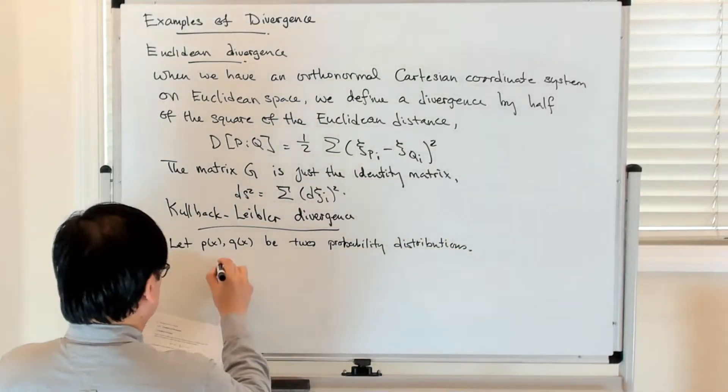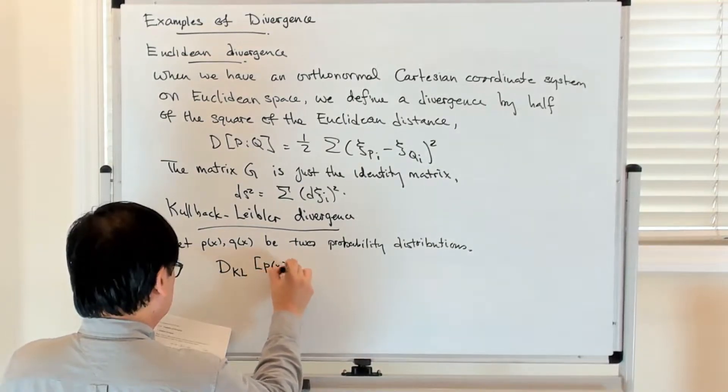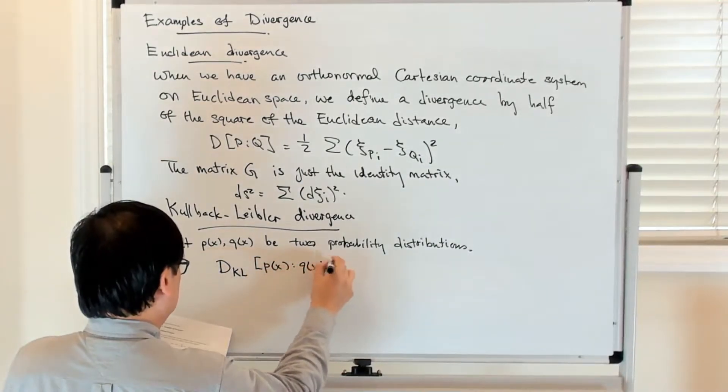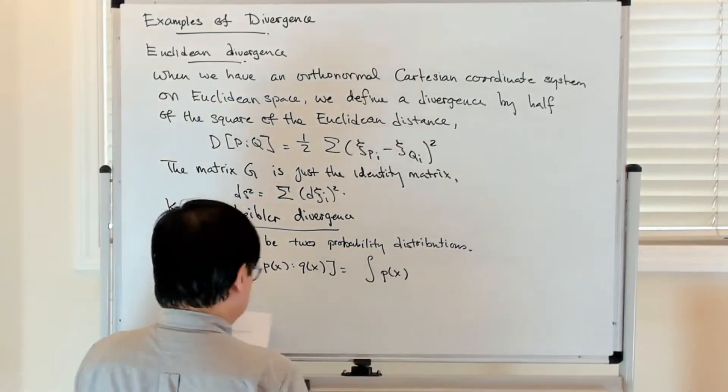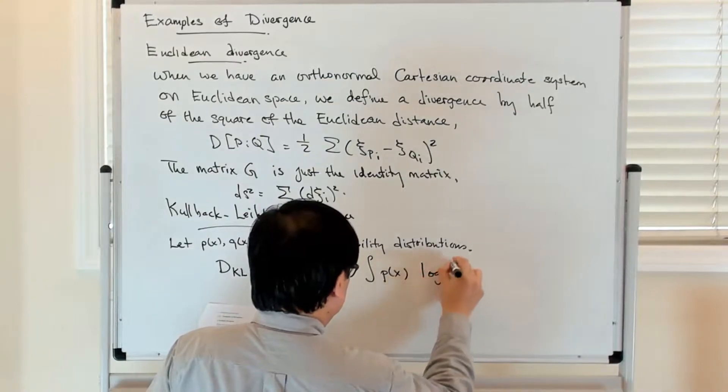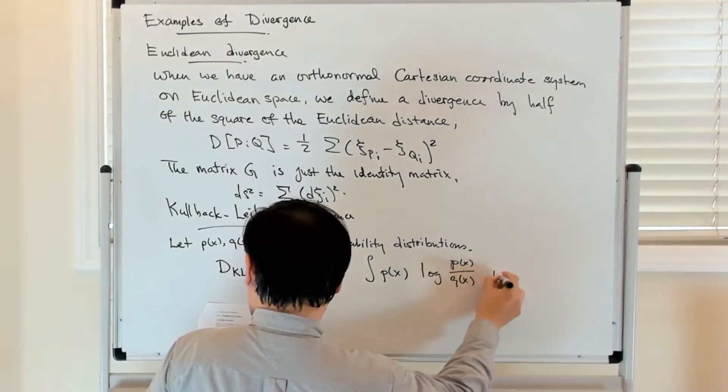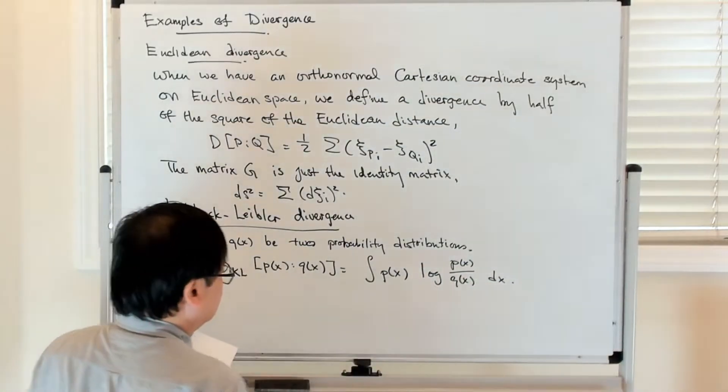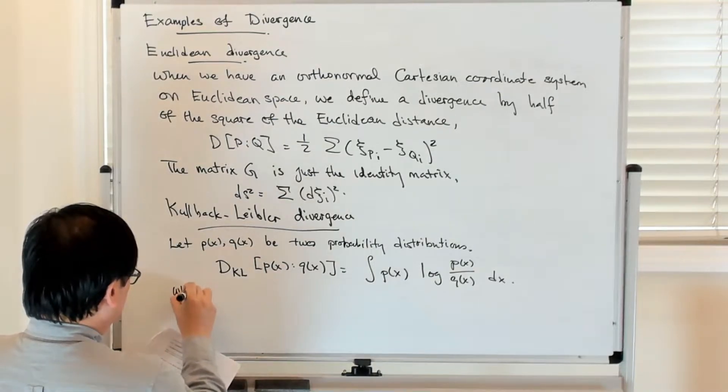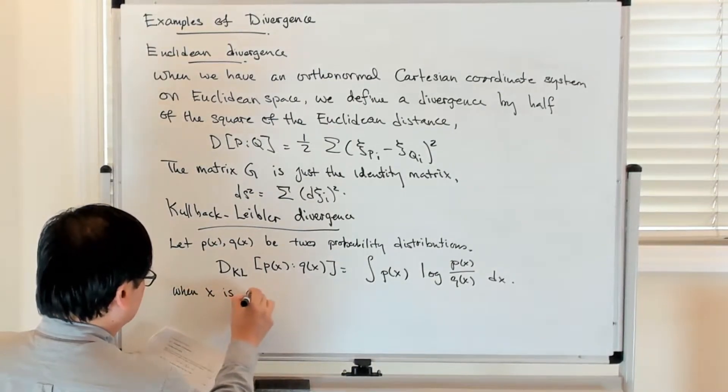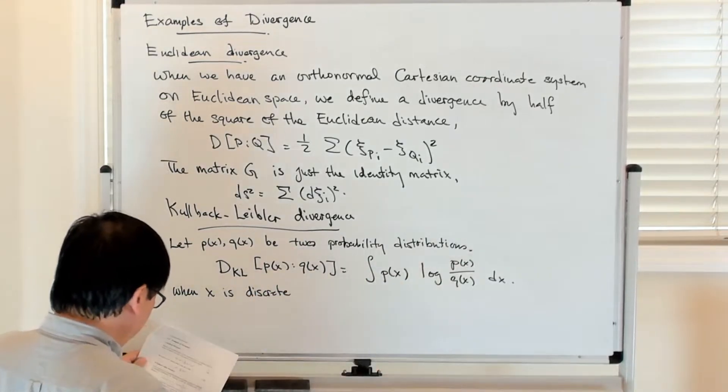The Kullback-Leibler divergence of these two probability distributions is given by the integral of P(x) log [P(x)/Q(x)] dx. And then when the random variable X is discrete, the integral gets replaced by a sum.